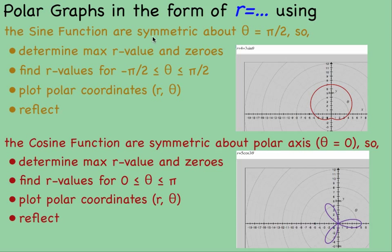With the sine function, the graph is symmetric about theta equals pi over 2. You can see that just reflected. So when we graph this, we only really need to graph points from negative pi over 2 to pi over 2 and then reflect. It also helps to know the maximum value and any zeros. I can see here there really are no zeros, but the maximum value is 7.